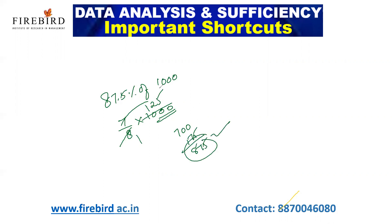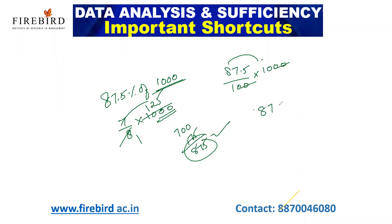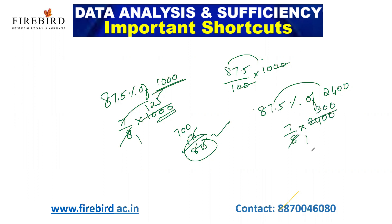Since it is 1000, you can cancel directly: 87.5 divided by 100 into 1000 — two zeros cancel and 87.5 into 10 gives 875. But if I give you a difficult number like 87.5% of 2400, use 7/8 into 2400. 2400 divided by 8 is 300, so 7 into 300 gives 2100 as your answer.